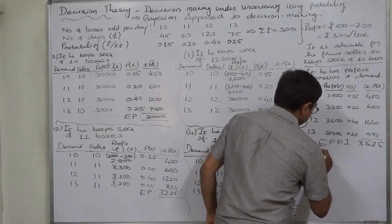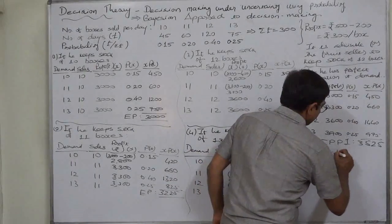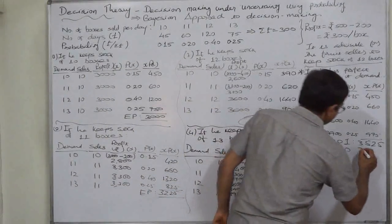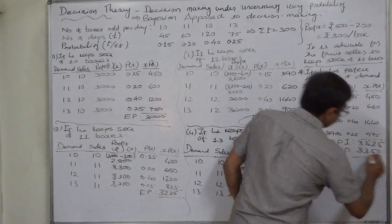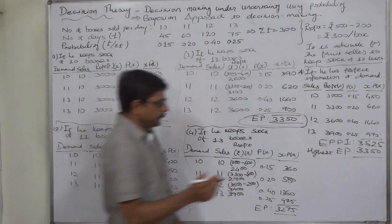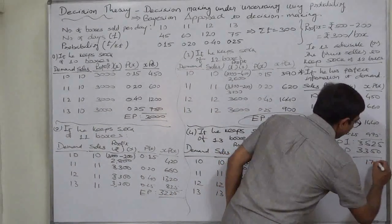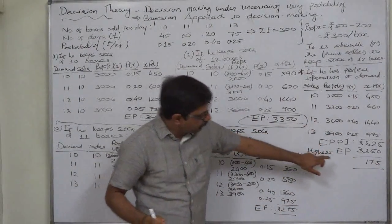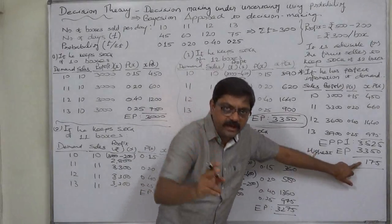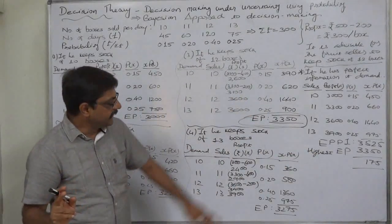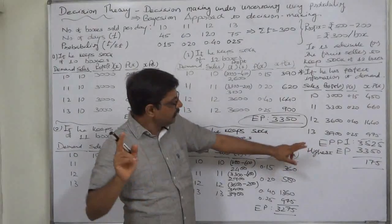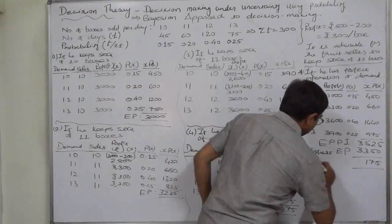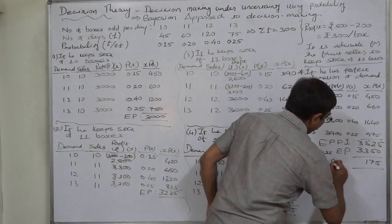The highest expected profit under no perfect information — keeping 12 boxes — is Rs. 3350. This is rational behavior. The difference is Rs. 175. This is the extra profit he can earn every day by having perfect information about demand. Technically, this is called the Expected Value of Perfect Information (EVPI).